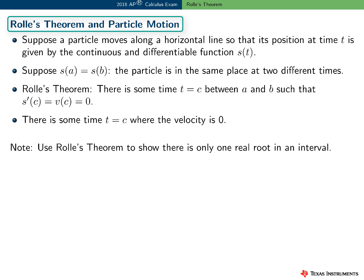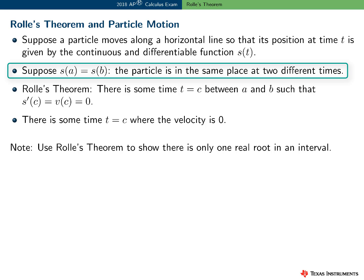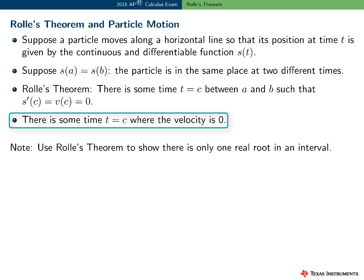Here's how we might apply Rolle's theorem in a particle motion problem. Suppose a particle moves along a horizontal line so that its position at time t is given by the continuous and differentiable function s of t. In addition, suppose that s of a equals s of b — this means the particle is in the same place at two different times. Rolle's theorem says there is some time t equals c between a and b such that s prime of c, which is v of c in context, equals zero. So there is some time t equals c where the velocity is zero.